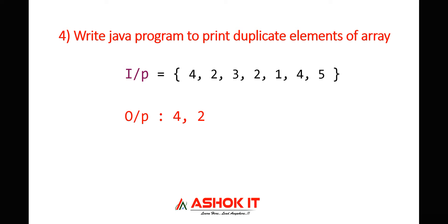Hi friends, this is Ashok, welcome to Ashok IT. In this video we will understand how to print duplicate elements of an array using a Java program. If you see here, I have taken one input array. In this array we have several elements, and a few elements are repeated — those are four and two. We need to find out which elements are repeated and get the output as four and two.